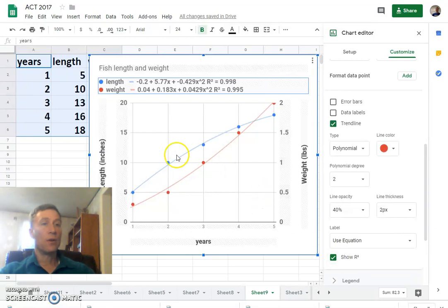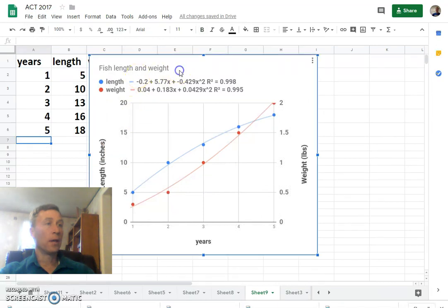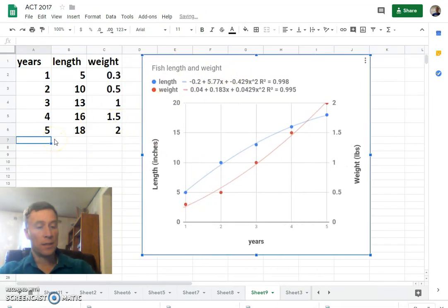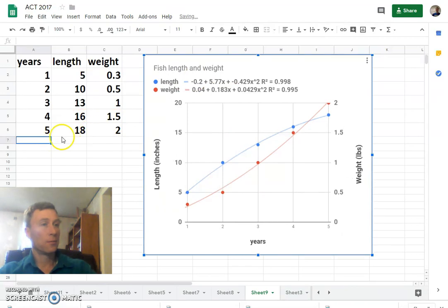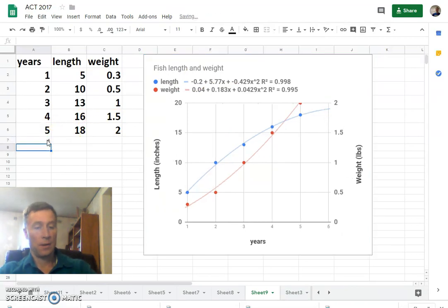So now, over here in our table, we can add years 6 and 7.